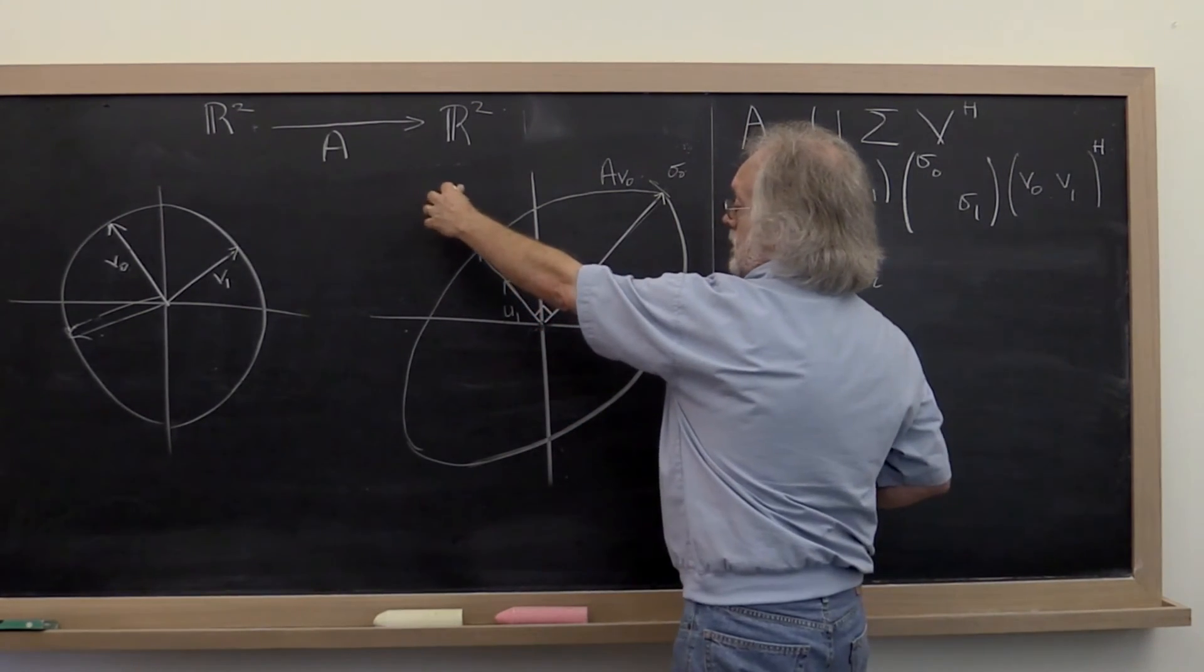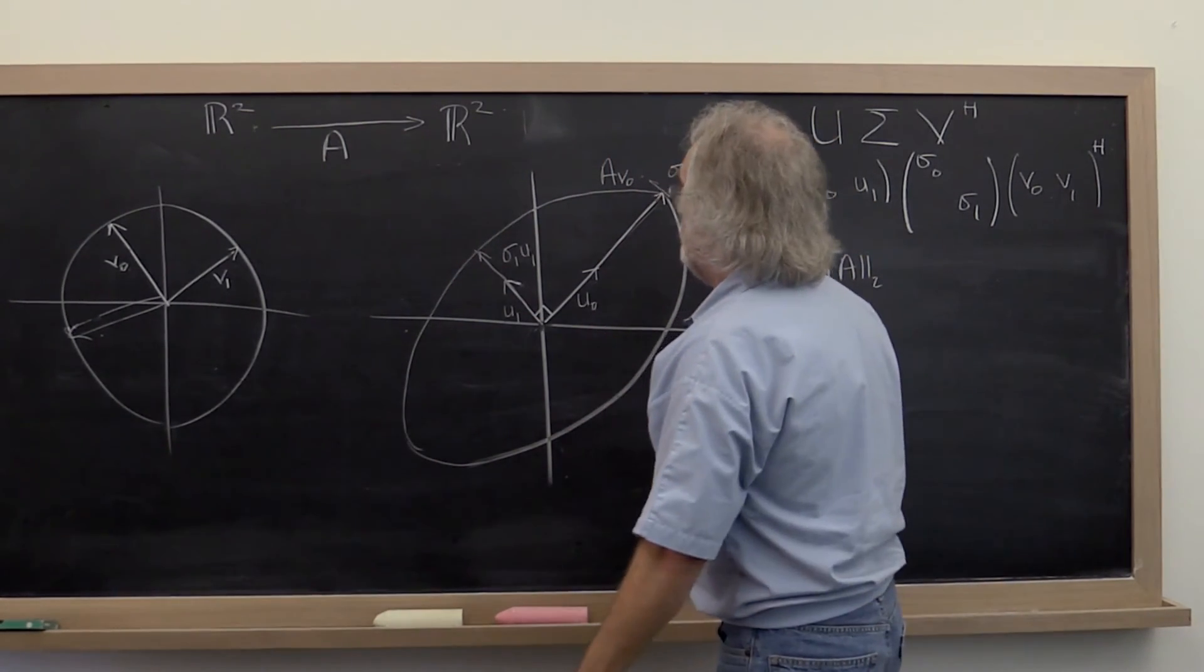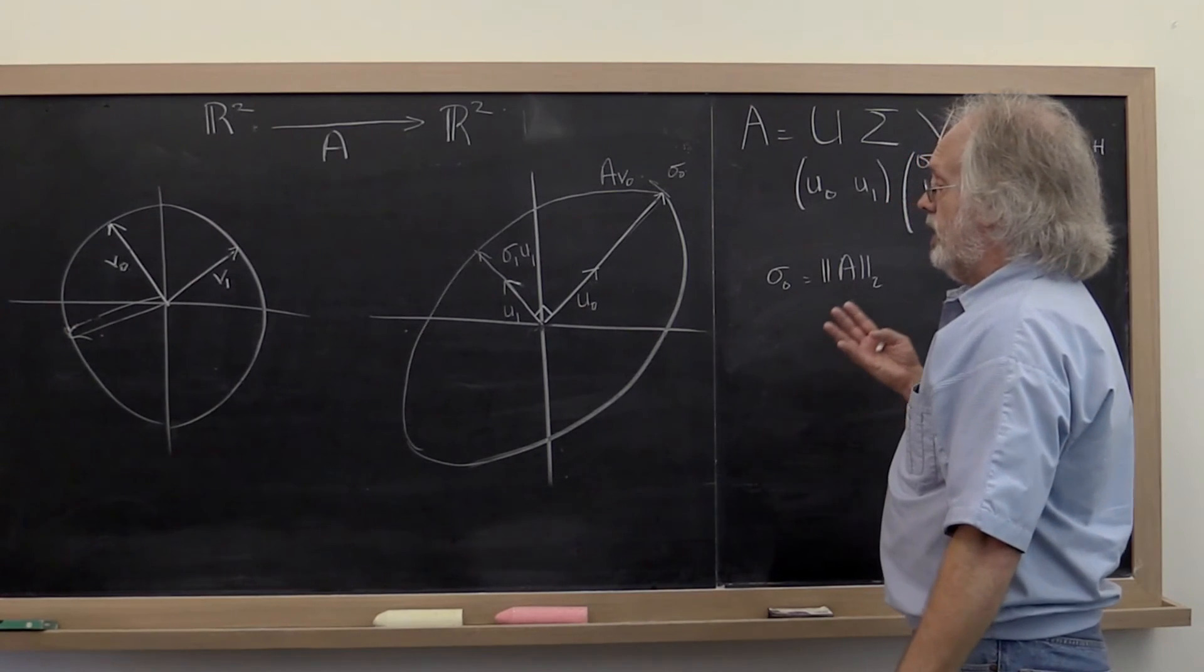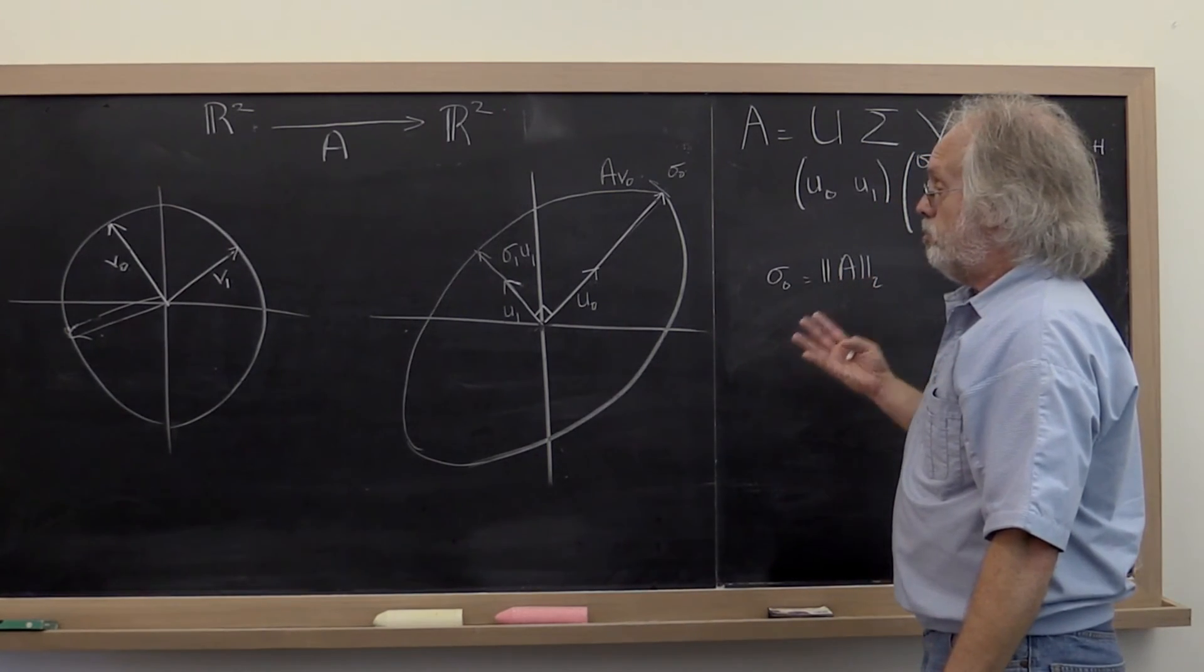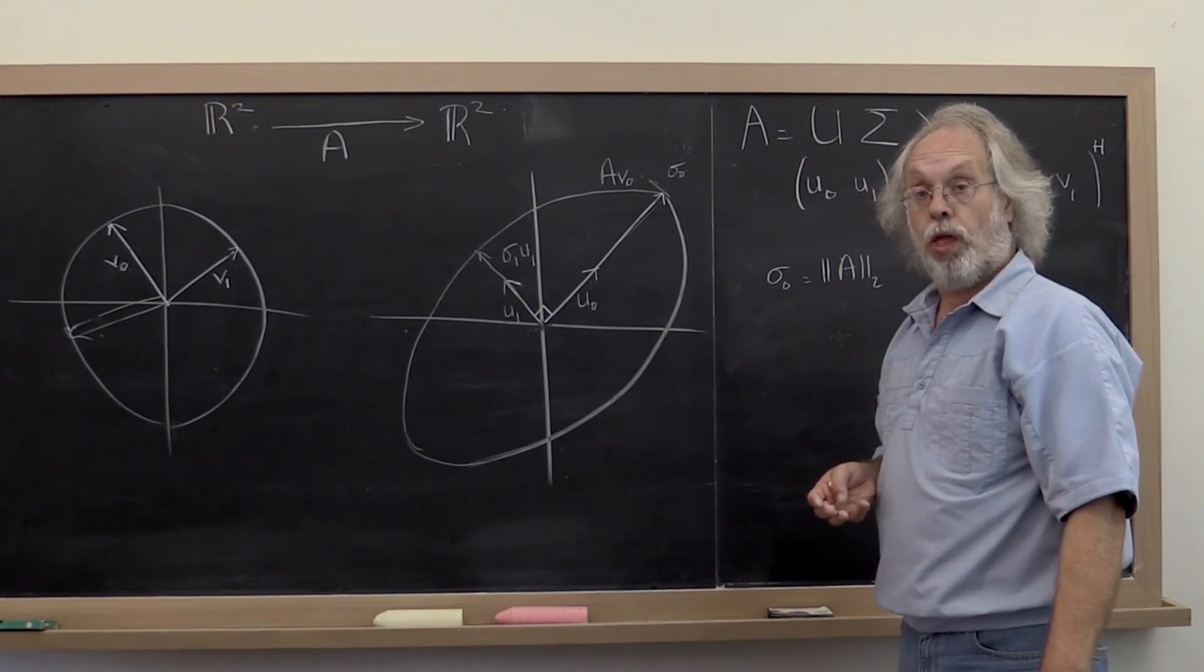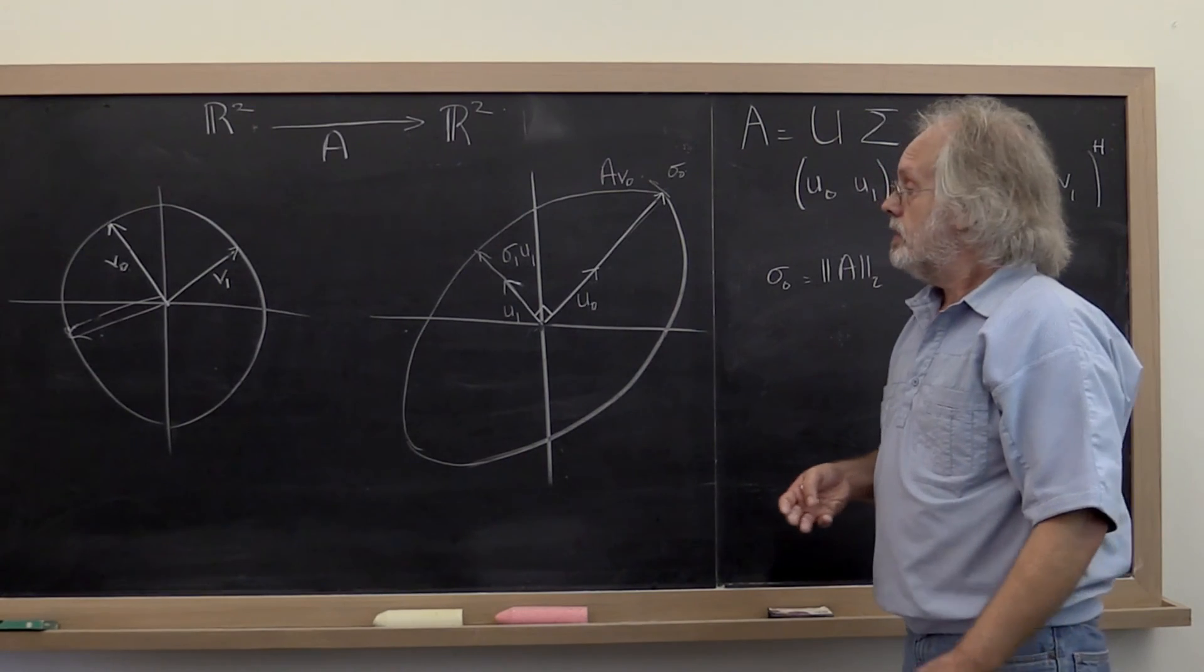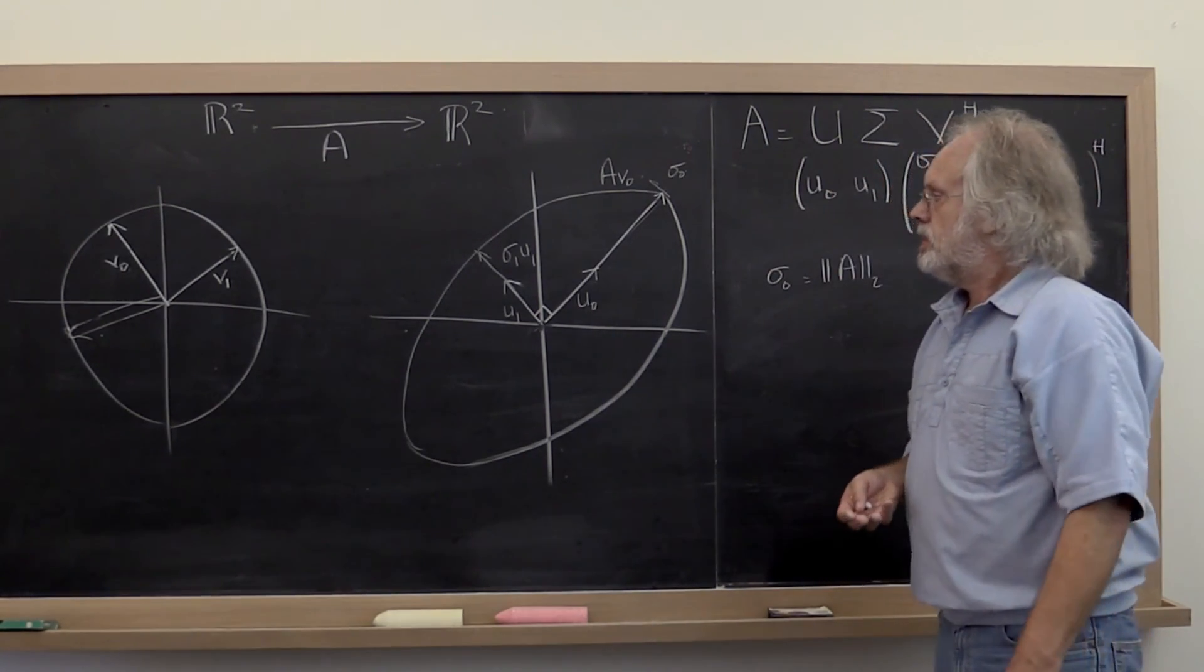If this is a perfect circle, then you actually end up with a matrix with condition number equal to 1. Those are the good ones. Anyway, there's the picture.